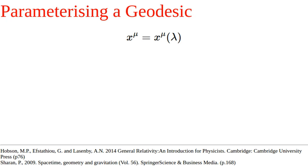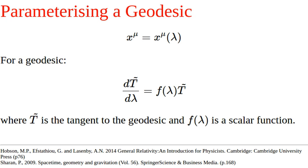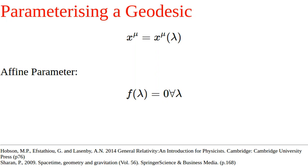It turns out for a geodesic that we can write that the rate of change of the tangent of the geodesic is proportional to the tangent itself. From this we can define an affine parameter as one for which the function of proportionality is zero for all lambda.